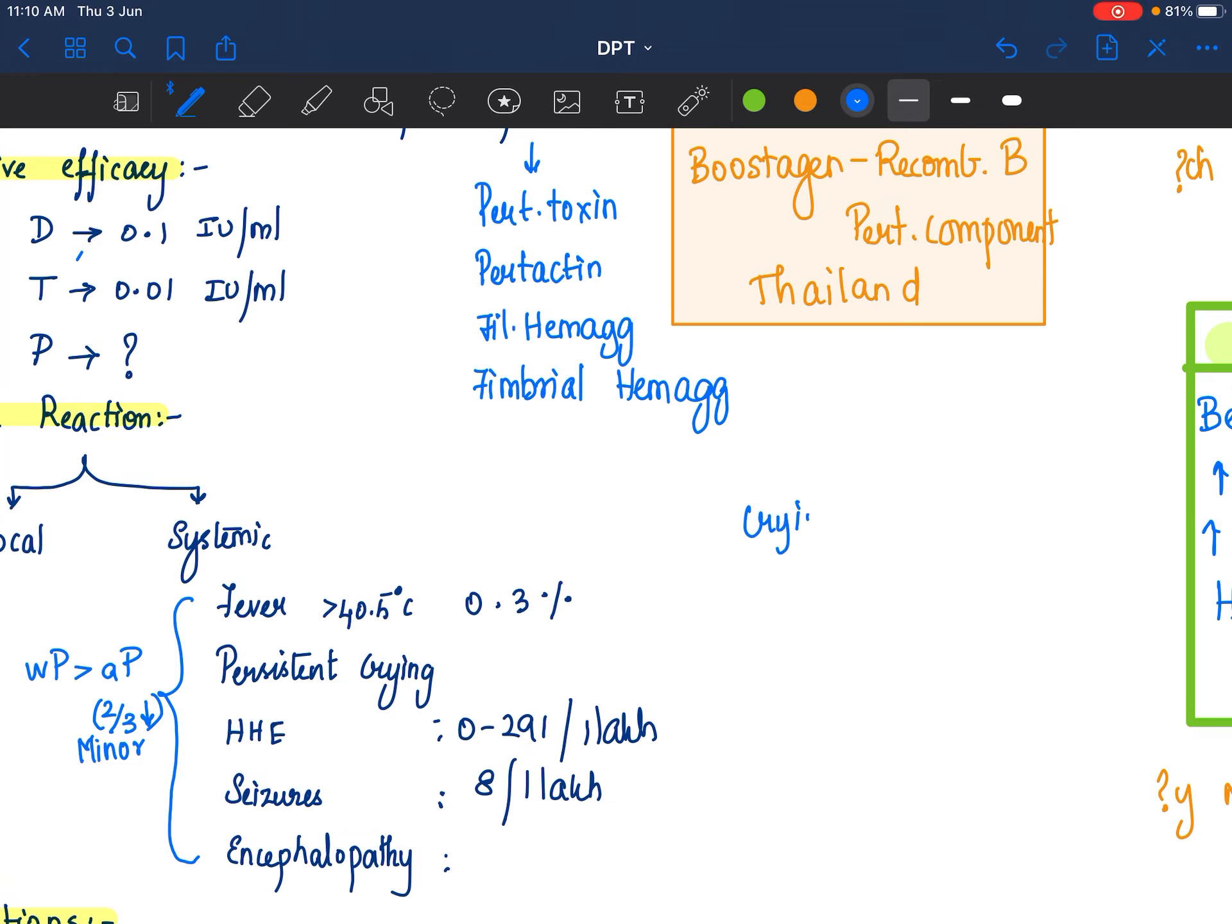All C's: crying, Celsius, convulsion, collapse and CNS injury. All C's. There are 5 C's.